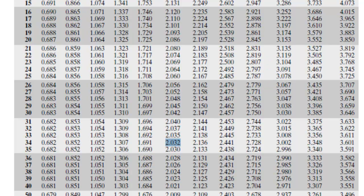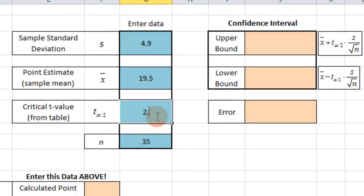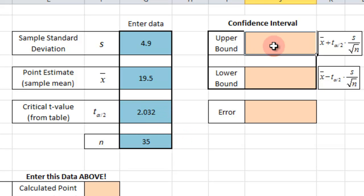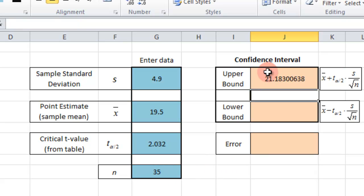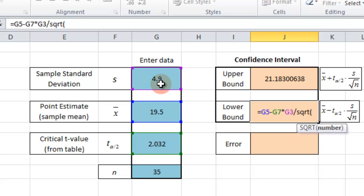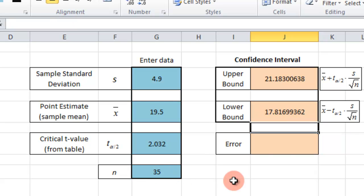So we use that as our critical value, 2.032. We plug it in here. So that is the information we need to get. Now we are allowed to calculate our bounds. Equals the sample mean plus the critical value here times the sample standard deviation divided by the square root of n. Hit enter. And this will be our upper bound. The lower bound same thing except with a subtraction. And then if I want to know the error, the error is just the difference between the sample mean and the lower bound. So there is that information.